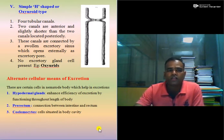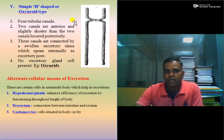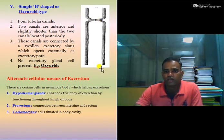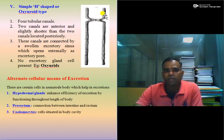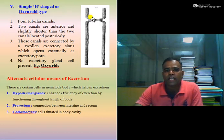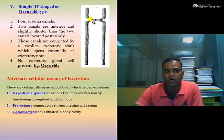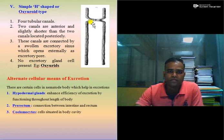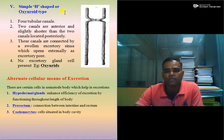The fifth is the simple H-shaped or Oxyuroid type excretory system. In this system, four tubular canals are present: two laterally in the posterior region and two laterally in the anterior region. These canals are connected by a swollen excretory sinus, which opens externally as the excretory pore. In the simple H-shaped or Oxyuroid type, there is no excretory gland cell present. The example is the Oxyuroid type nematode.